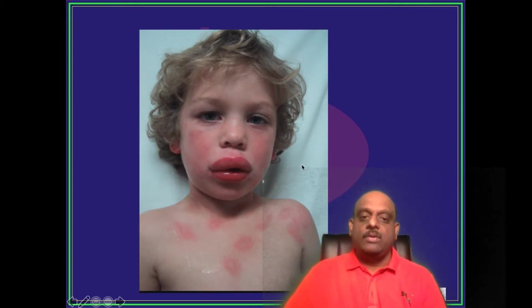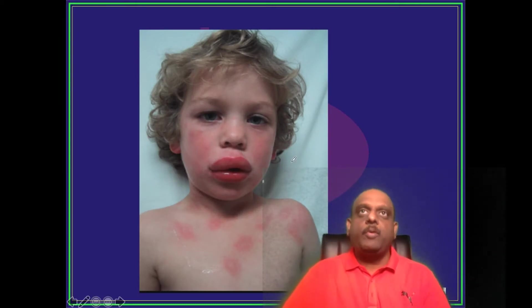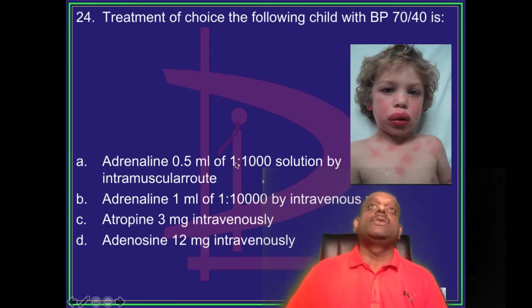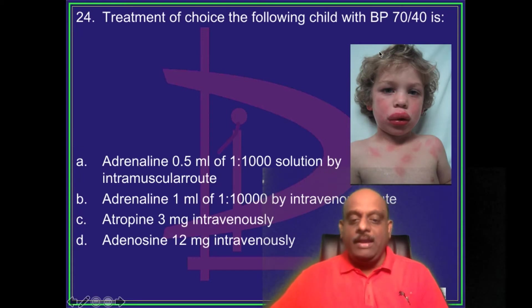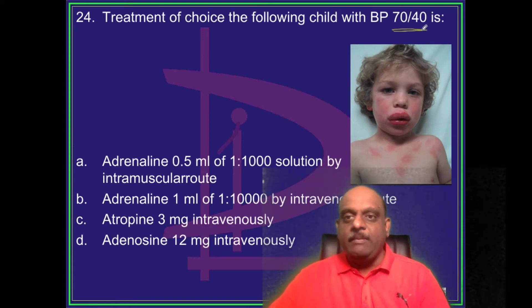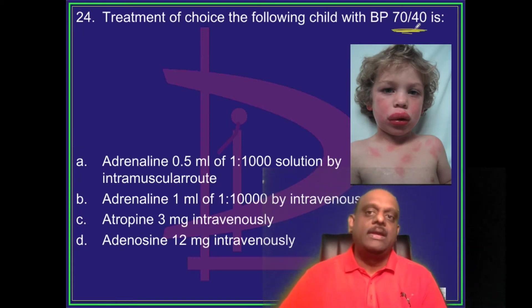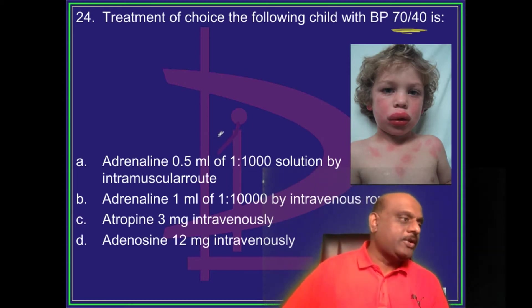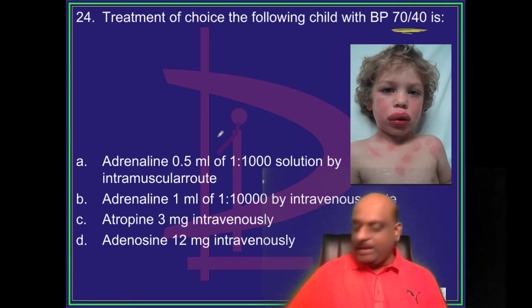A child is shown with a BP of 70/40. Looking at the lips only, you should be in a position to make a diagnosis. How do you want to treat this scenario? Keep entering your answers.